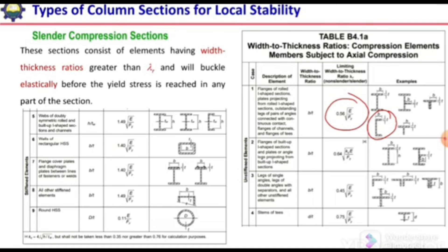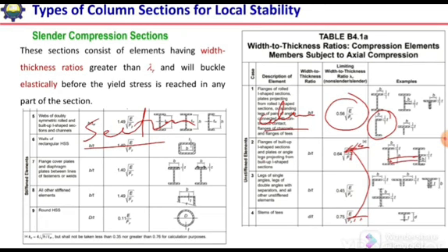We use two terms: 'section' and 'column.' The classification into short, intermediate, or long column is based on overall buckling of the member using slenderness ratio. A short column has a low slenderness ratio and the whole material yields. An intermediate column has a slenderness ratio between certain limits and partial yielding occurs. A slender or long column has a slenderness ratio greater than the critical value — this considers the overall member.